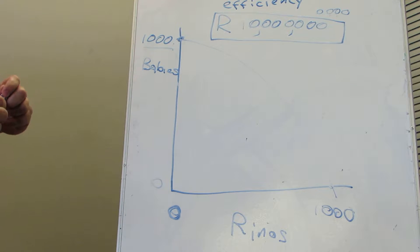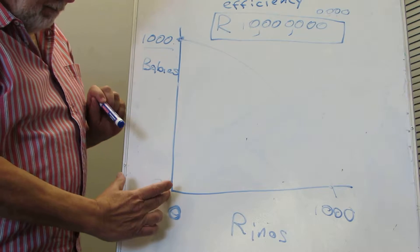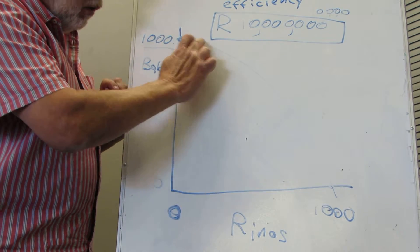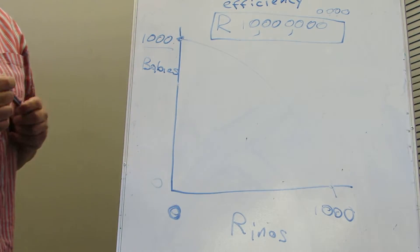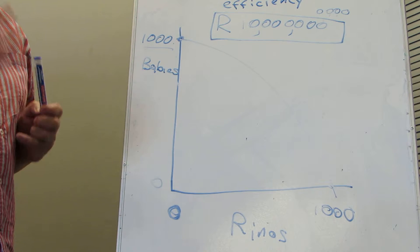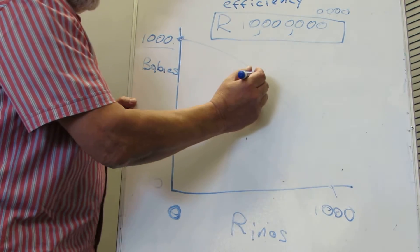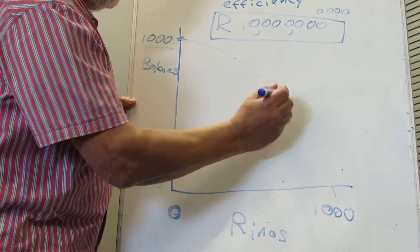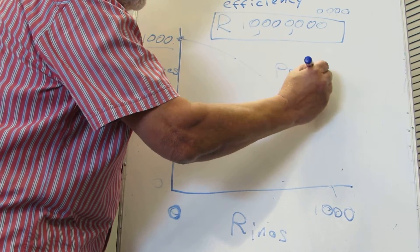Now the interesting thing here, that all along this curve, you are using your resources 100%. So we call this, any point here, you are productively efficient.